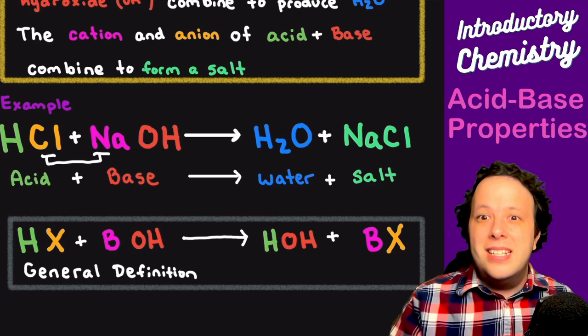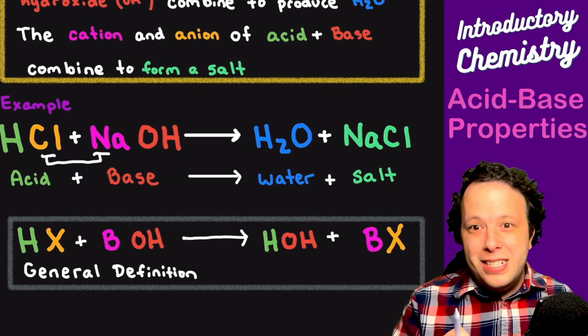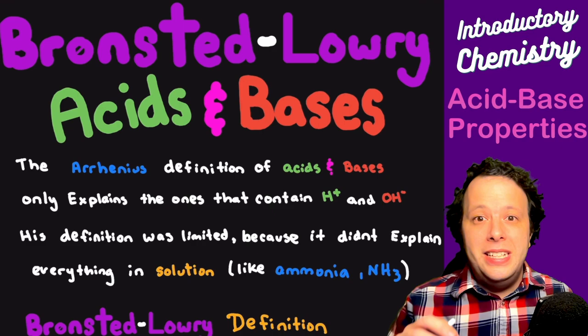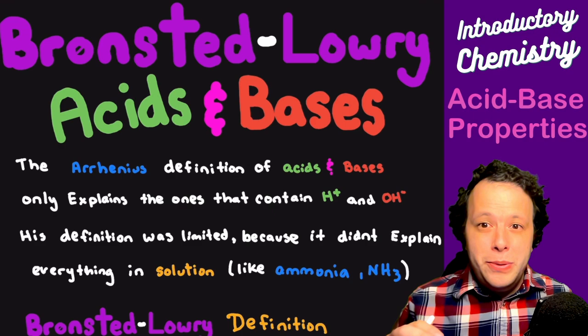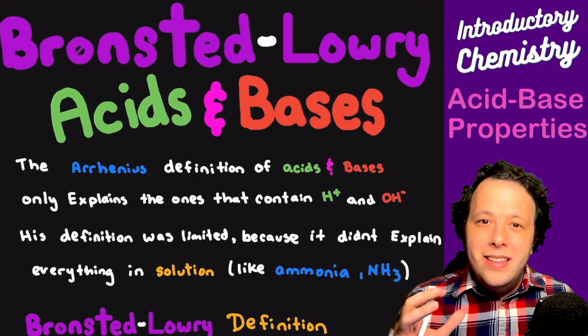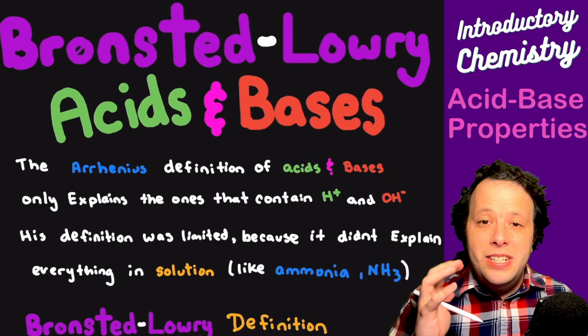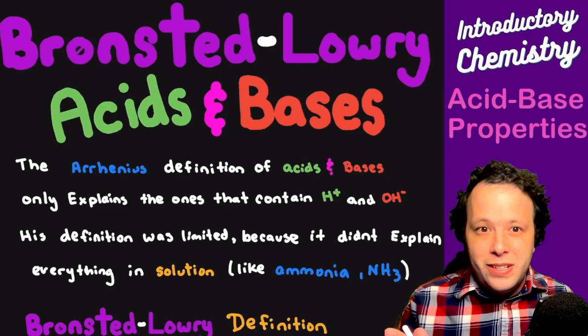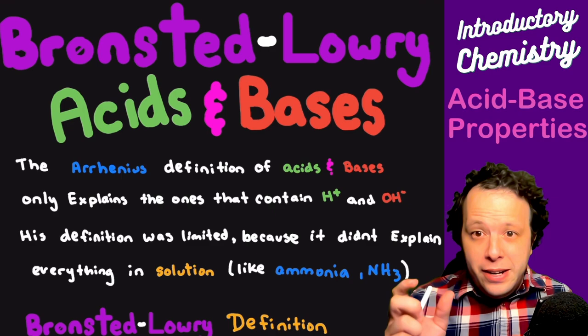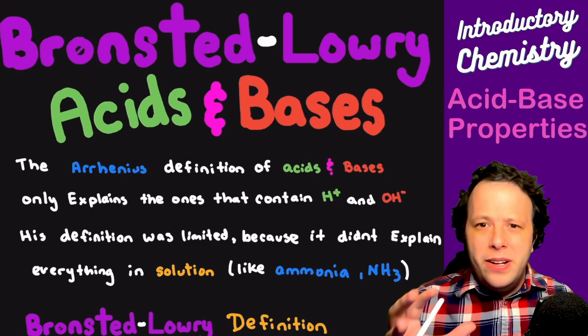That definition was not a complete picture. H+ is generally how we describe acids, especially when working with the pH scale, however it was slightly incomplete. Acids and bases in the Arrhenius definition only explain molecules that contain H+ and OH-, meaning it is very limited. There are other types of acids and bases that don't follow this definition — for example, ammonia, one of the most common weak bases, doesn't generate H+ or OH- and doesn't follow this definition.